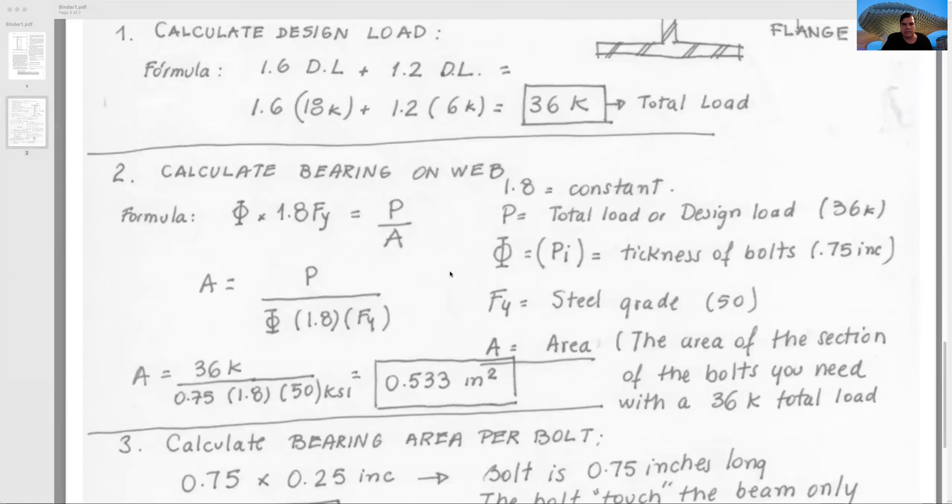Second step: we will calculate the bearing on the web. What does that mean? For example, you have a bolt, and the bolt has an area where the bolt allows the support. If this is the bolt, it's like a round element, and that round element obviously has a particular thickness.